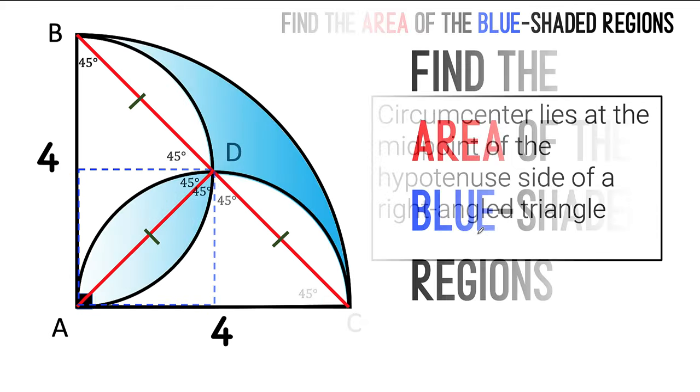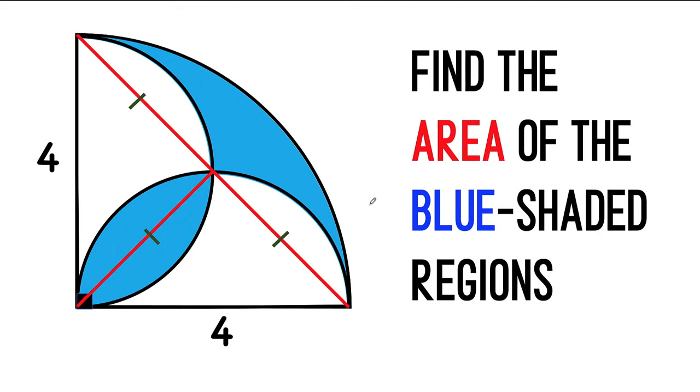Now why is that important? That is important, because going back now to our main problem, if we can show that these three line segments are equal, and they are segments of the same semicircle, then this shaded region here must be identical to the shaded region here, and we can just transfer that shaded region.